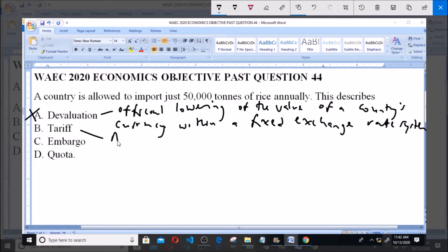Now option B says tariff, and tariff is a tax on imports or exports between sovereign states. As you can see from the scenario painted in the question, it has nothing to do with a tax on imports or exports. So option B tariff is not the correct answer to this question.